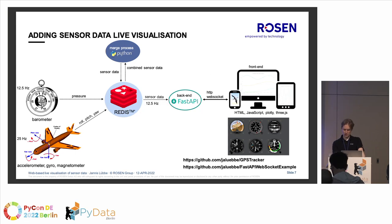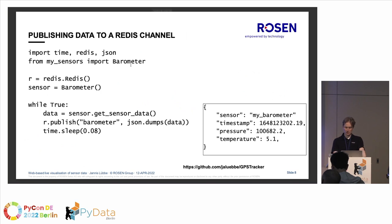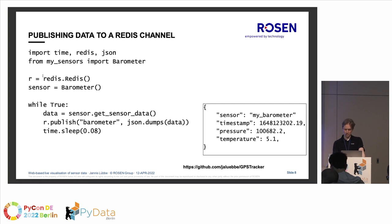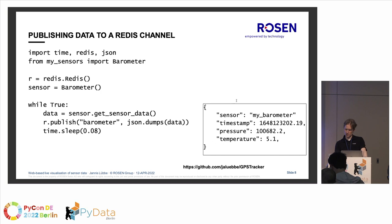Let's look at how we get data from the sensor to Redis. It's simplified code: we import the Redis client, JSON library, time, and the barometer sensor implementation. We initialize the Redis connection and the sensor, then simply run a while loop continuously reading sensor data and publishing it to a Redis channel named 'barometer' using JSON dumps. The JSON string contains a timestamp, the current pressure, the current temperature, and the sensor name.